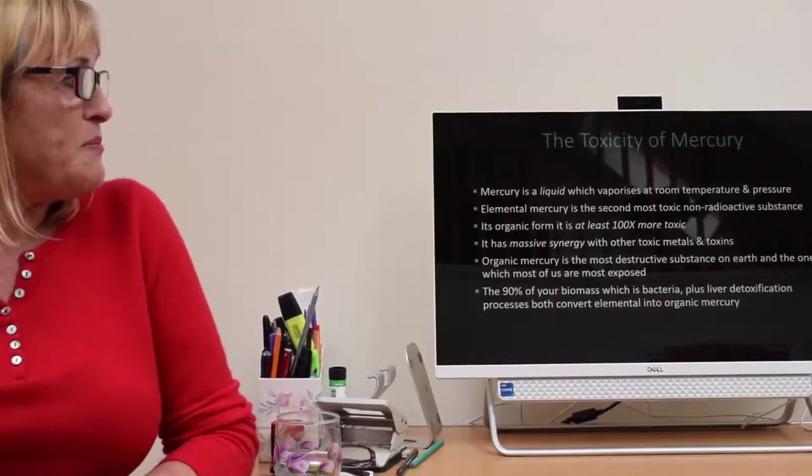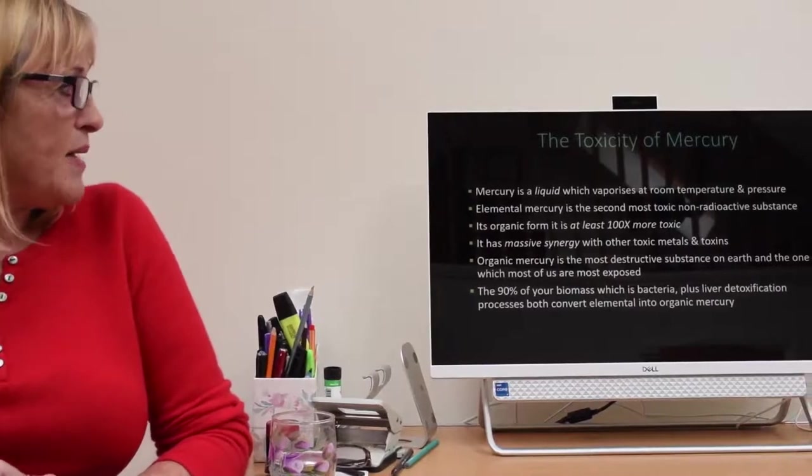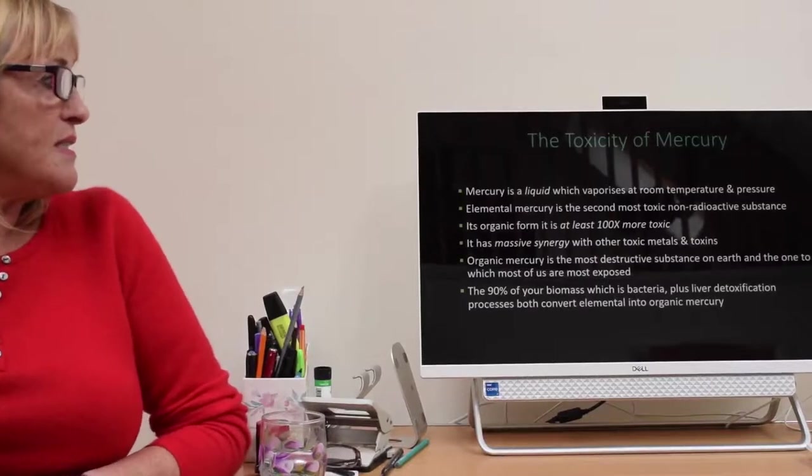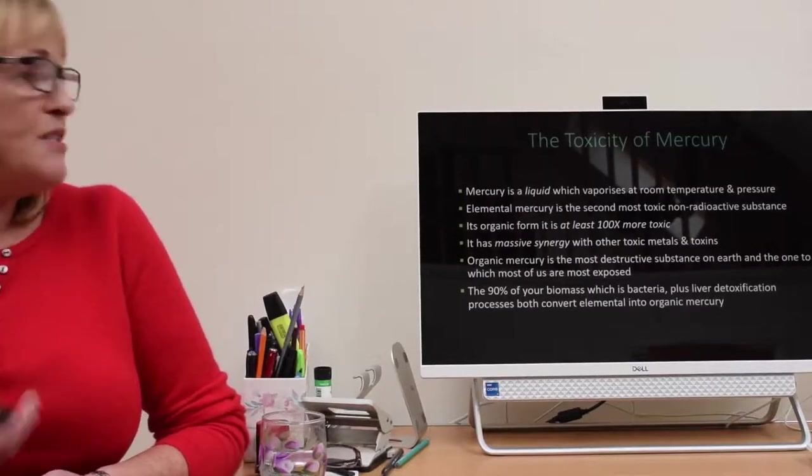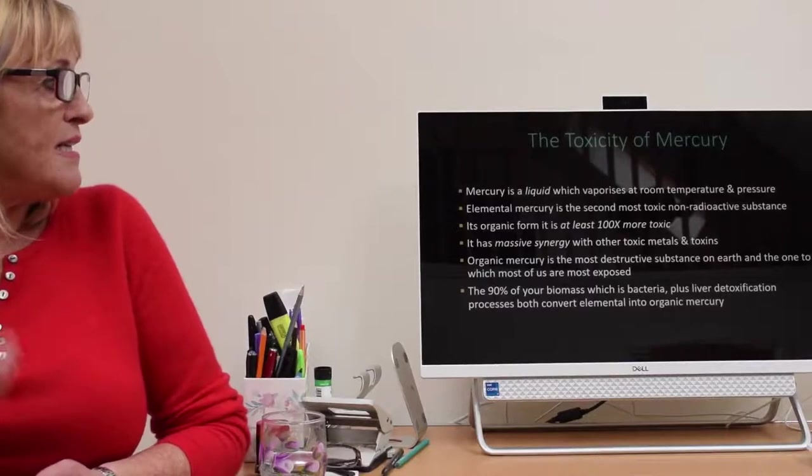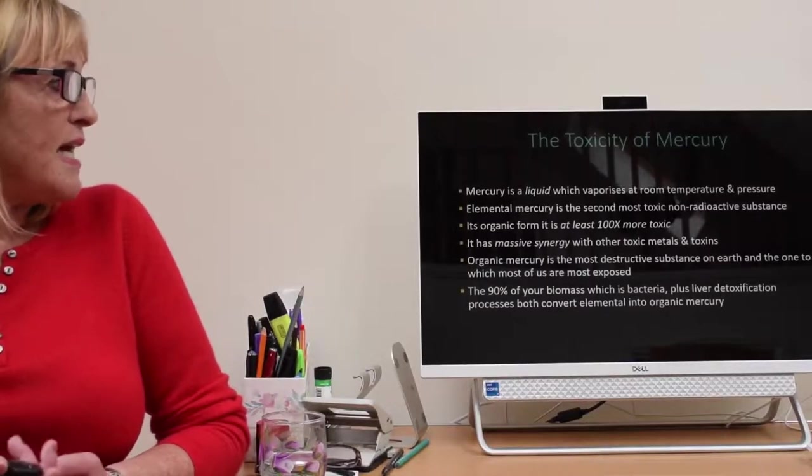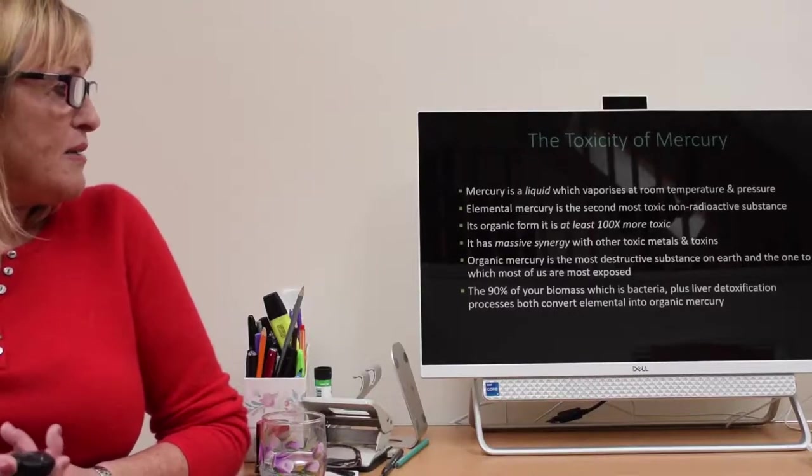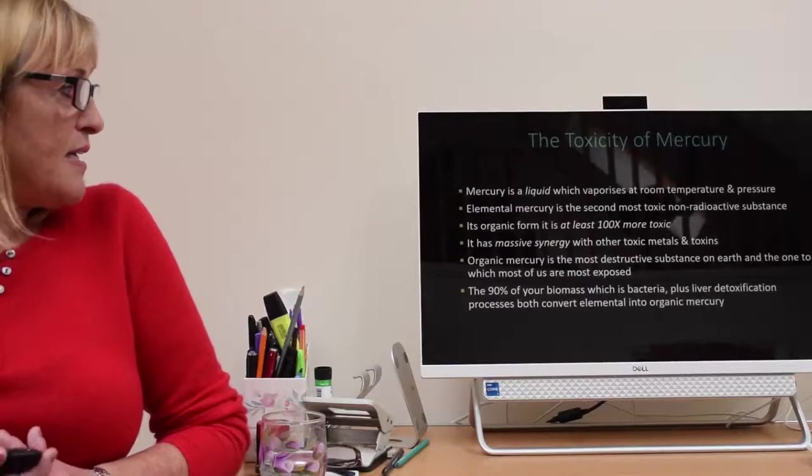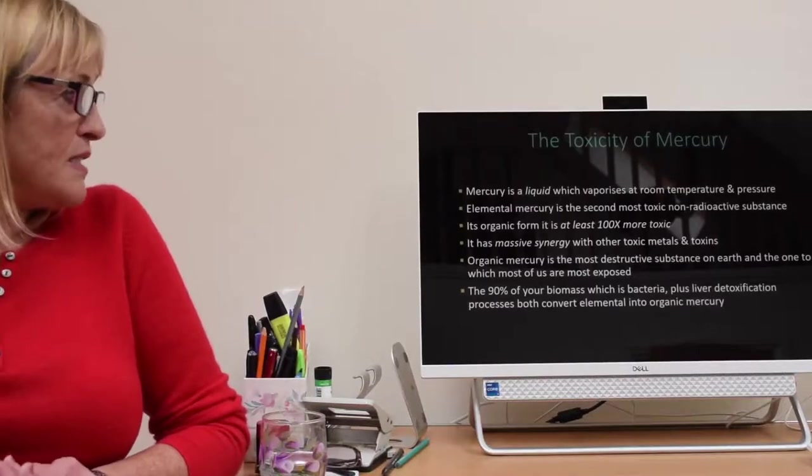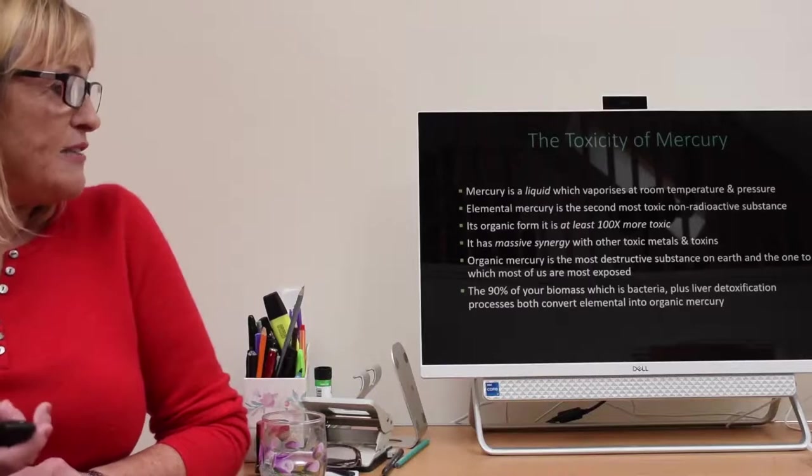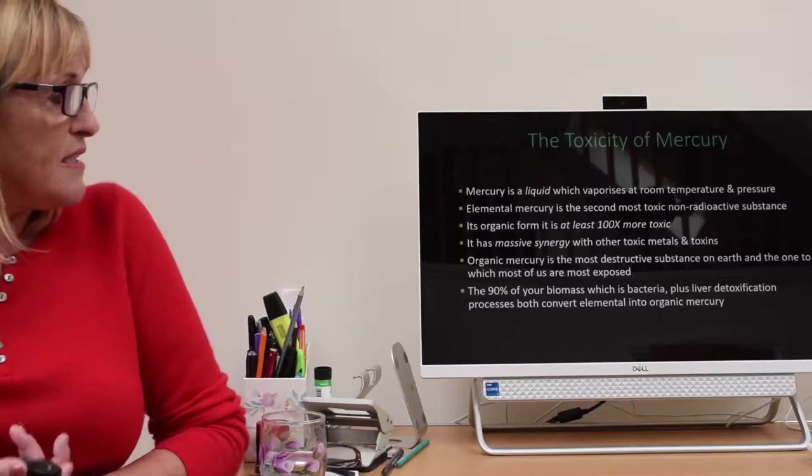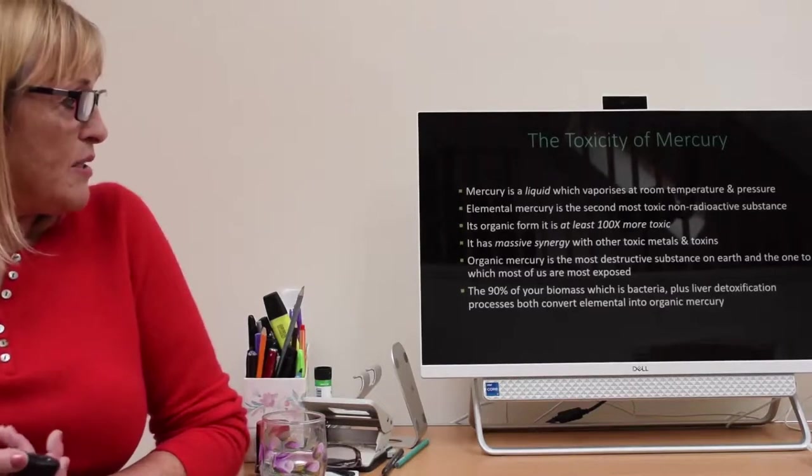Mercury is a liquid which vaporizes at room temperature and pressure. Elemental mercury is the second most toxic non-radioactive substance. When it's converted into its organic methyl form it's at least a hundred times more toxic. It has massive synergy with other metals and toxins. Organic mercury, methyl mercury is the most destructive substance on earth and the one to which most of us are exposed. A lot of your body is bacteria, and that converts elemental mercury into organic mercury, as does methylation in the liver. Creates methyl mercury too.